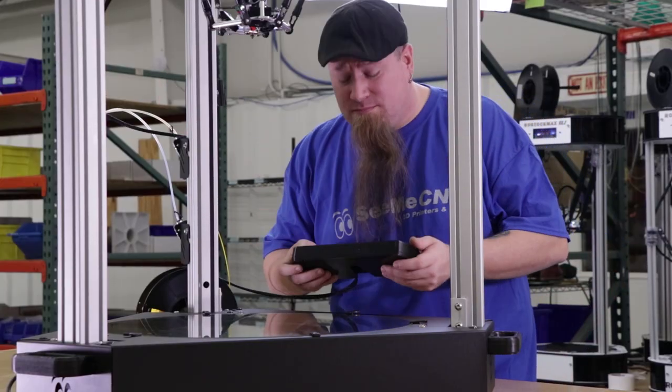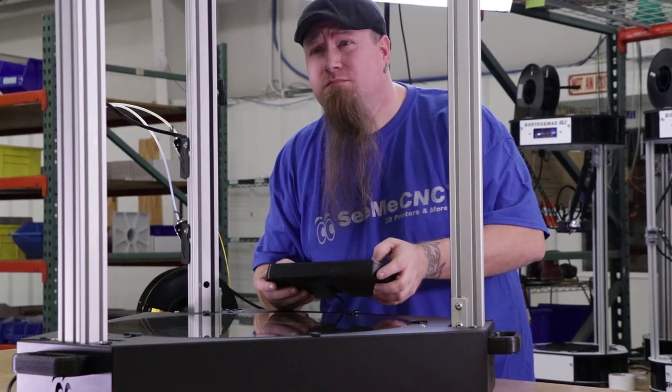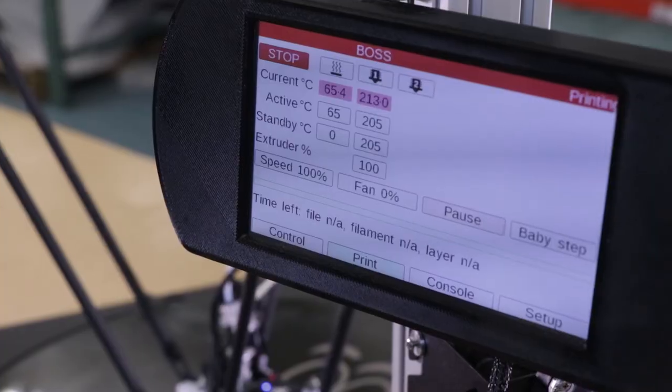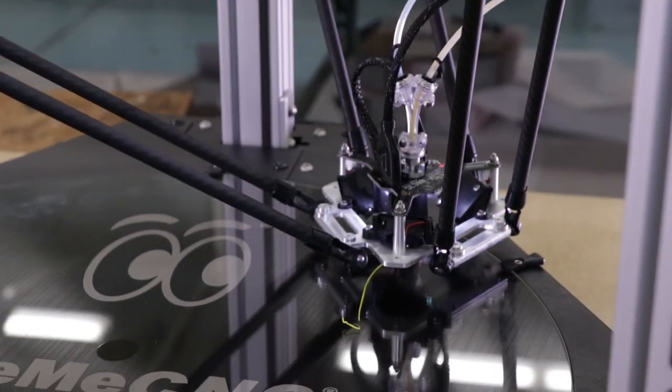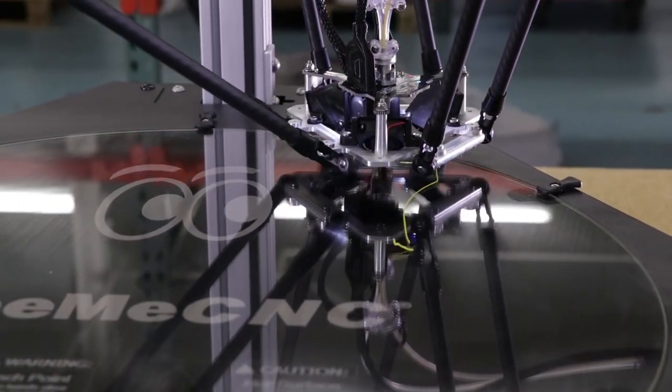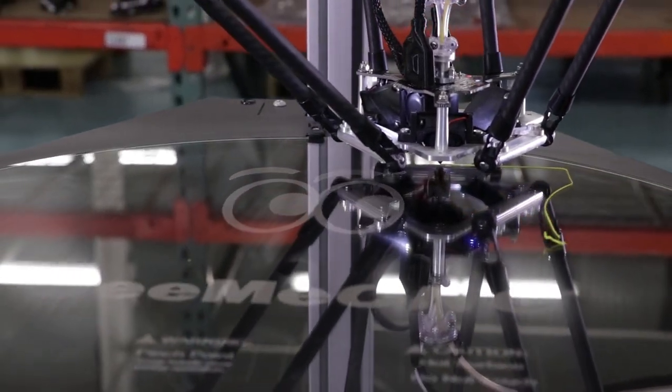The Boss Delta features a removable 7-inch touchscreen to give you maximum control. A 500mm diameter heated bed creates a massive launch pad to send your company into a more successful future.